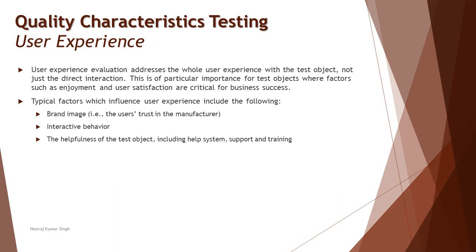Typical factors that influence user experience, which a team testing usability should consider, include: brand image — the user's trust in the manufacturer (for example, when someone says it's an iPhone, people buy without hesitation); interactive behavior — no matter what product is released, users know it will provide a great interaction experience; and the helpfulness of the test object, including the help system, support, and training — what kind of guided tour do you get when you install the app for the first time.